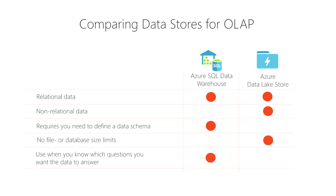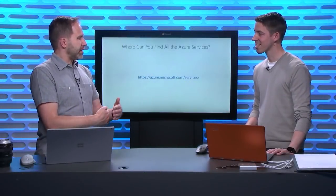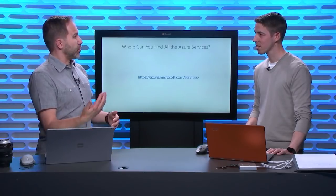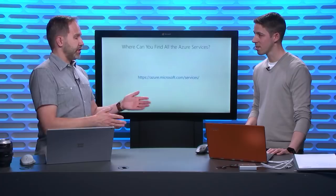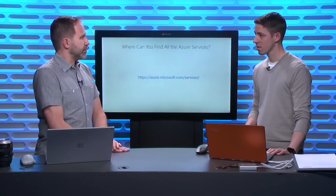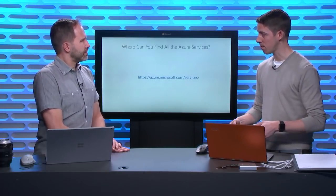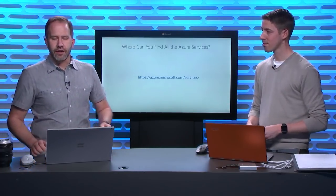That's my process for choosing services for running your application and storing data — just two of many Azure service categories. There are loads more services for securing your application, IoT, and other scenarios, all found at the Azure services URL. I appreciate the formality and explicitness of this process because a lot of us just pick services we're familiar with. What Barry has done is clearly map business needs and technical needs to the myriad of services available. It's his process, and it may not work for everyone, but hopefully it helps.